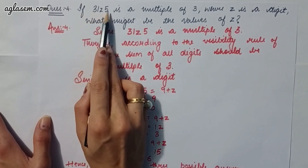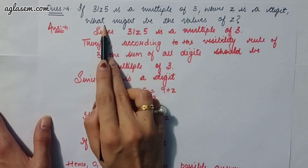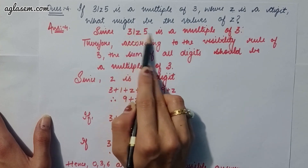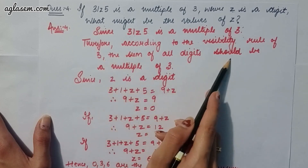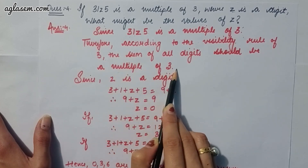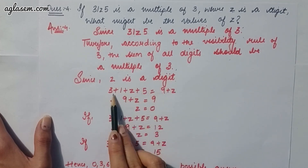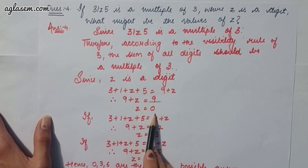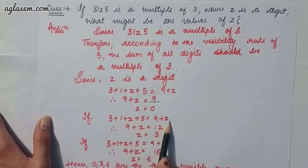Moving to the fourth question, which says: if 31z5 is a multiple of 3, where z is a digit, what might be the value of z? According to the divisibility rule of 3, the sum of all digits should be a multiple of 3. So 3 + 1 + z + 5 = 9 + z. If 9 + z = 9, then z = 0. If 9 + z = 12, then z = 3.